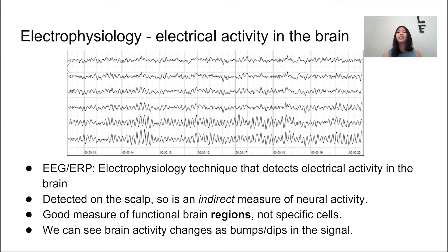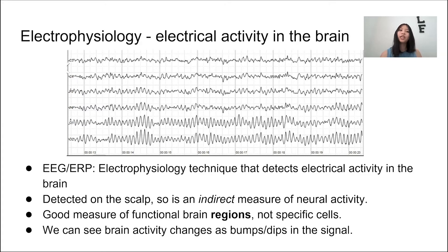You might know or at least maybe heard of EEG or electroencephalogram. Basically we have electrical activity in the brain and if we can detect those signals it could provide us useful information on how the brain and our mind works. EEG is an electrophysiological method that measures those changes in electrical signals when neurons fire in the brain. These signals are detected by non-invasive electrodes placed on the scalp, so it's actually an indirect way of measuring neural activity.